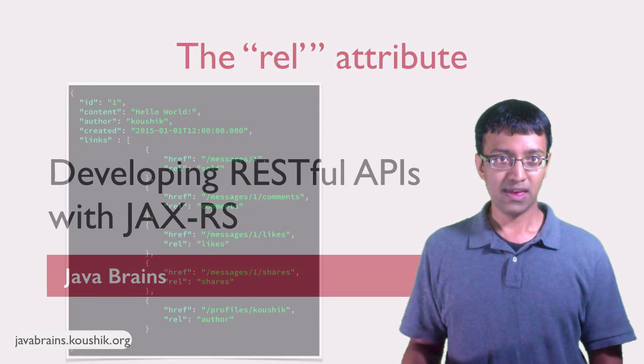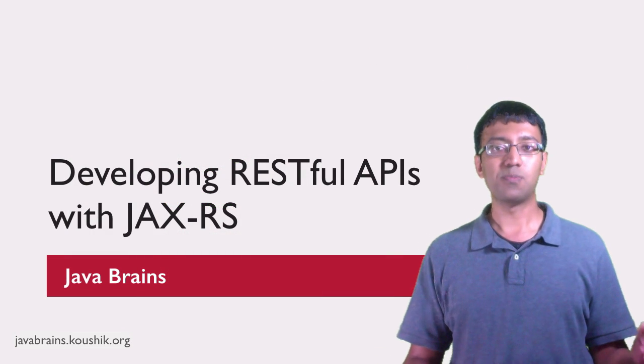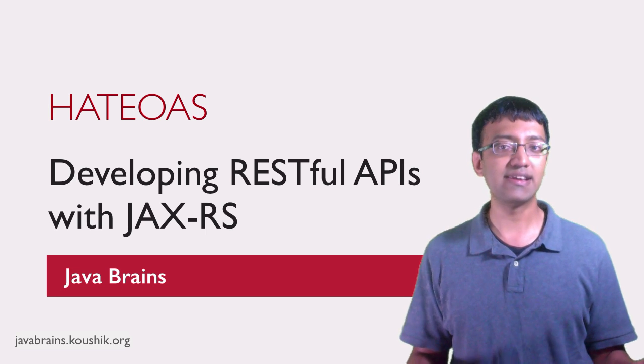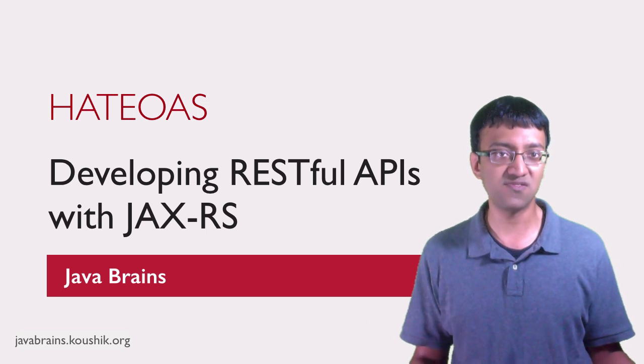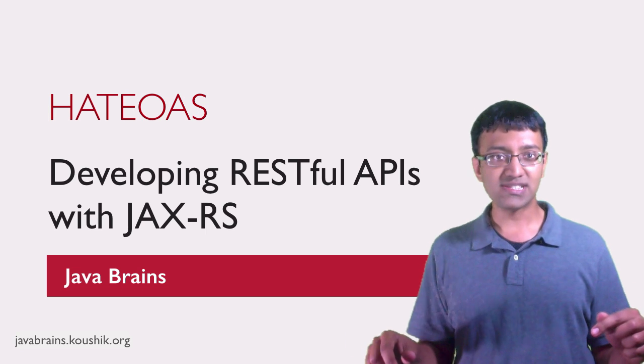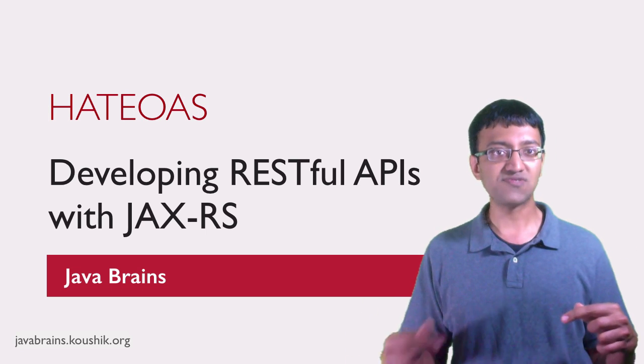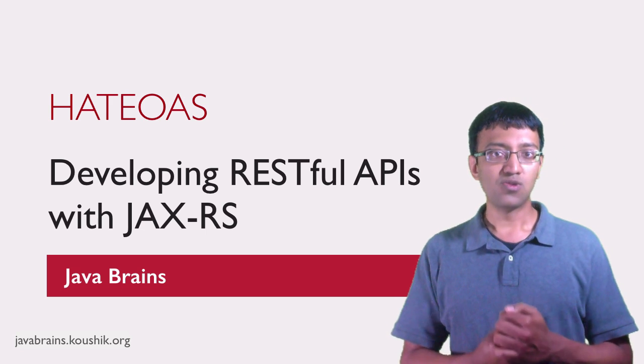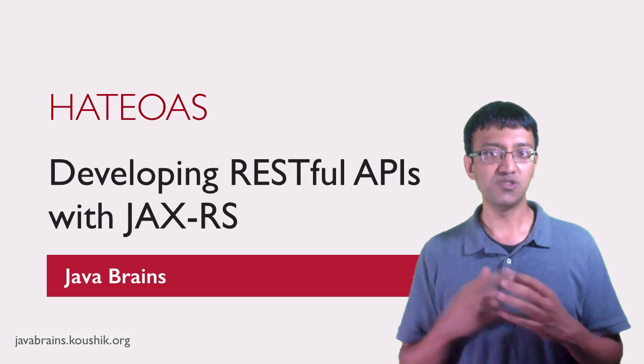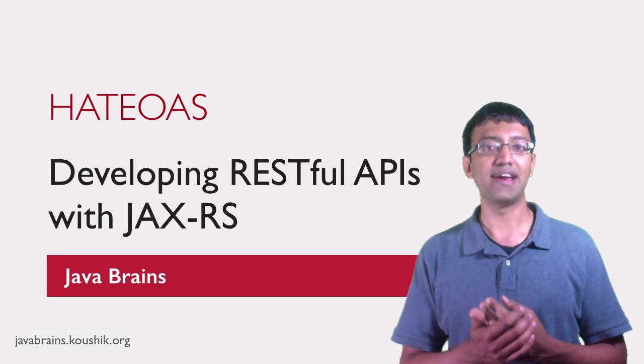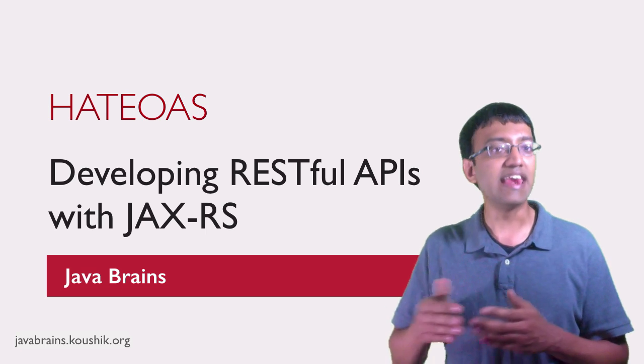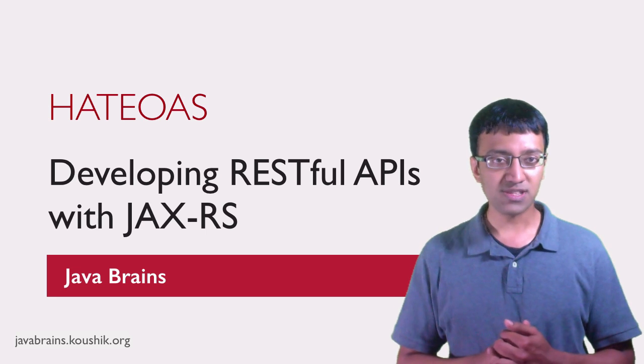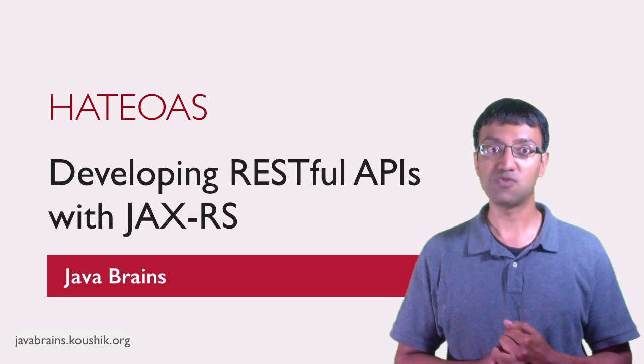In summary, HATEOAS is a way to provide links to resources in the API response so that the client doesn't have to deal with the URI construction and the business flow. They make a request and the next steps along with the URIs for the next steps are handed to them in the response. When you write APIs, you can choose to add these URIs using the href attribute. They can also provide more information about the relationship to the link resource using the rel attribute. I hope the concepts are clear and I'll see you in the next tutorial. Thanks for watching.